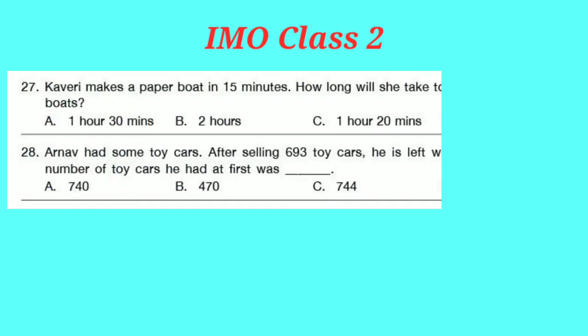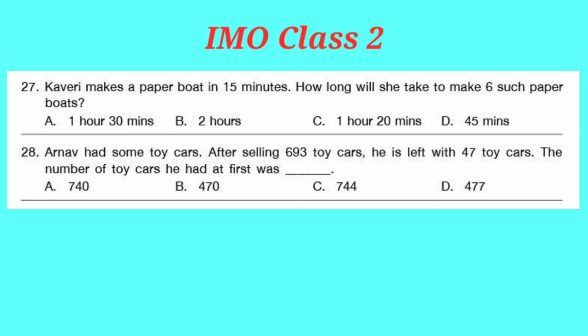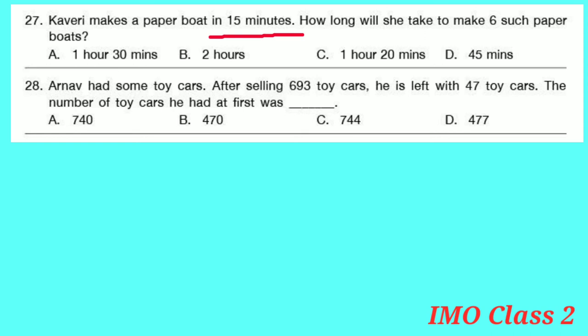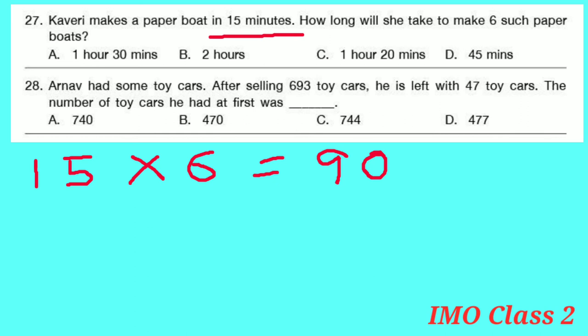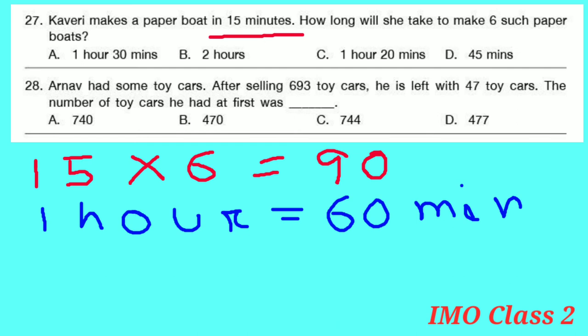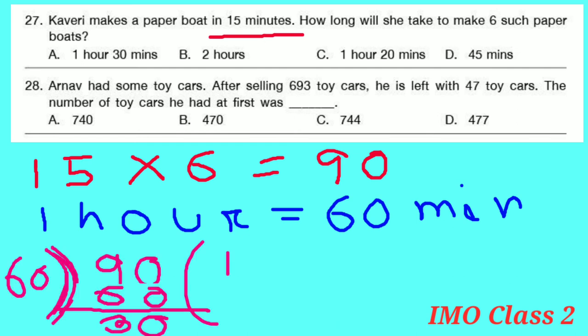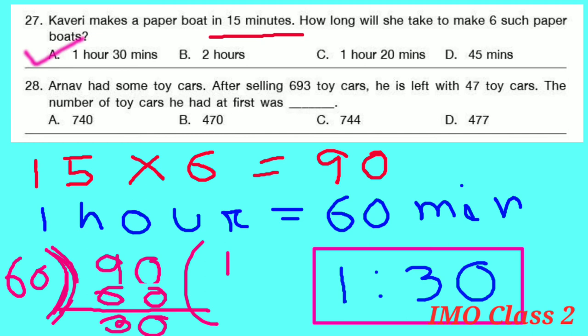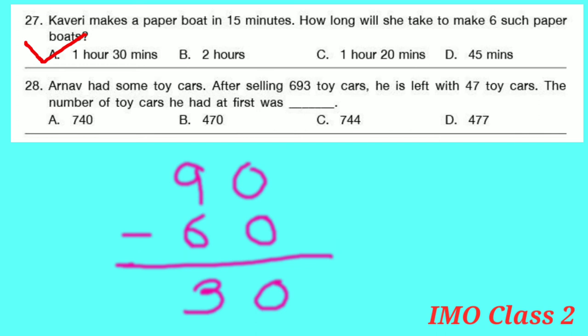Question number 27: Cauvery makes a paperboard in 15 minutes. How long will she take to make 6 such paperboards? Time for 6 paperboards: 15 × 6 = 90 minutes. Converting to hours: 90 minutes = 1 hour 30 minutes (since 90 − 60 = 30). Option A is correct — 1 hour 30 minutes.